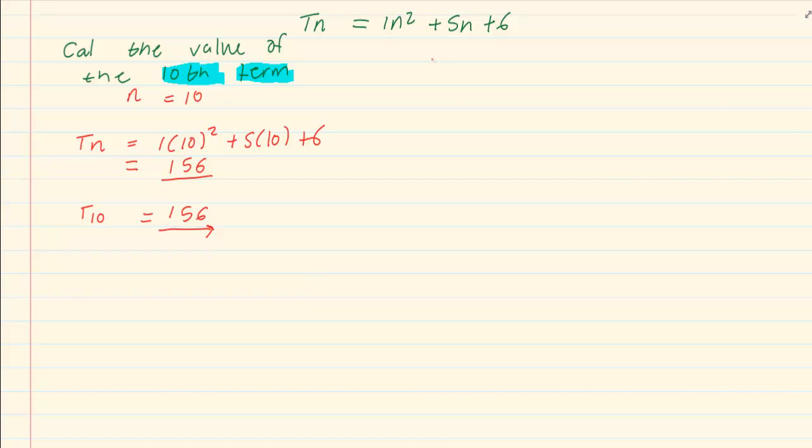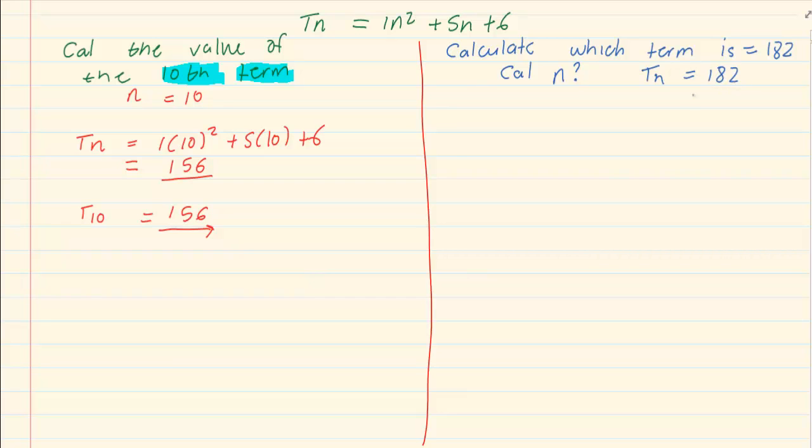Now look at how we change the question. Calculate which term is equal to 182. Now what are they giving me? You have to calculate n. Therefore they are giving me tn. They are telling me tn is equal to 182.